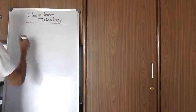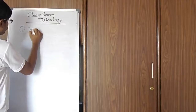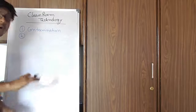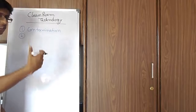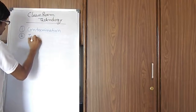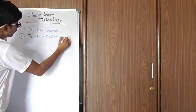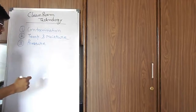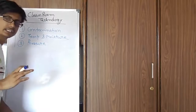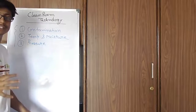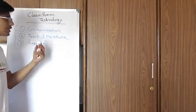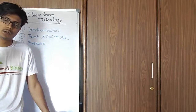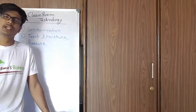Let me write some of the things that are monitored in the clean room. One is contamination — contamination is the biggest enemy of any production, whether it's a biotechnology or biopharma production unit or a semiconductor production unit. The second thing is temperature and moisture content, which should be maintained properly. The pressure of the room is also important. These are the three major things we need to control to keep a clean room safe for producing products.